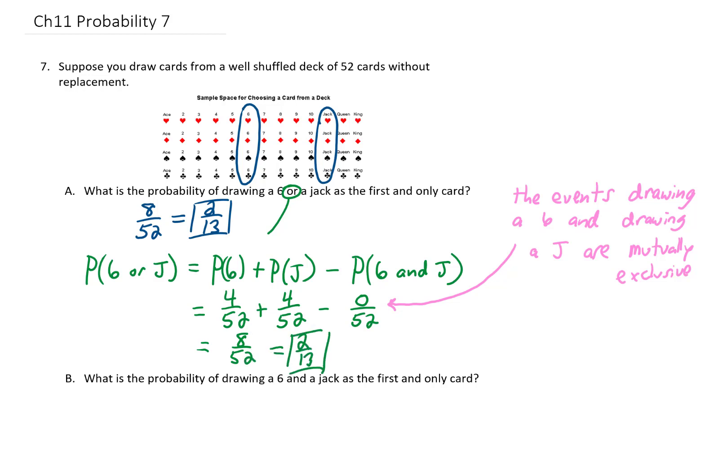No matter how you do this problem, the probability works out the same — it reduces to 2 thirteenths. The next question is: what is the probability of drawing a 6 and a jack as the only card that you draw? Again, drawing a 6 and drawing a jack are mutually exclusive, so the probability is 0. You cannot draw both at the same time.